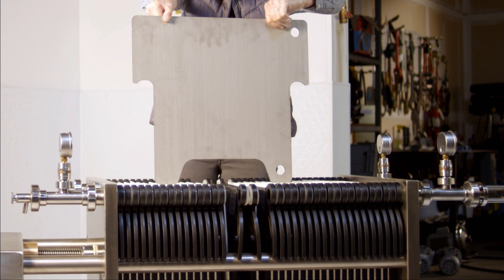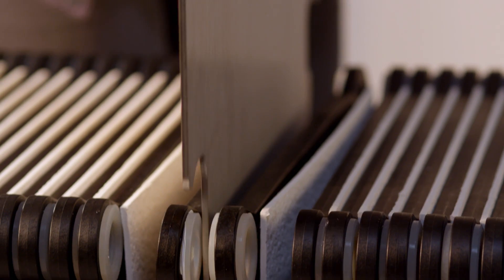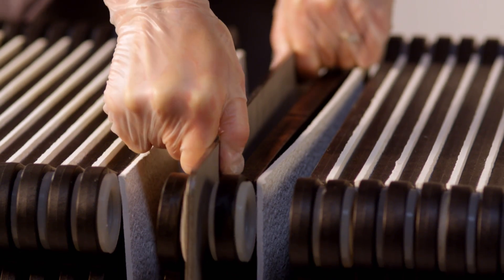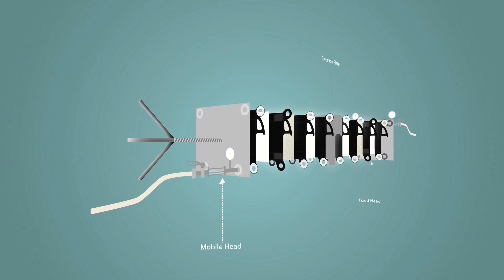When filtration through two different filter sheet grades is desired, a plate commonly referred to as a diversion or crossover plate can be used. The diversion plate effectively breaks a sheet filter into two stages.